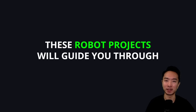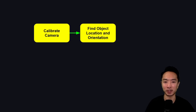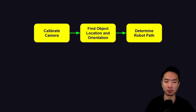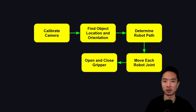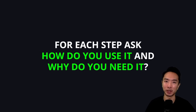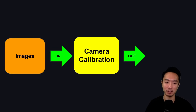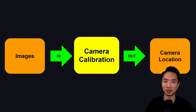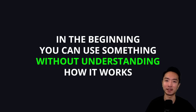These robot projects will guide you through each step. For example: first we calibrate our cameras, then we find the object location and orientation, we determine the robot path, we move each robot joint, and finally we open and close the gripper. For each step, ask how do you use it and why do you need it. Taking camera calibration as an example — the input is images and the output is the camera location. In the beginning, you can use something without fully understanding how it works.